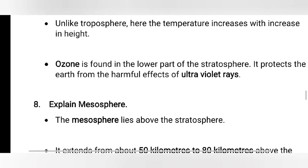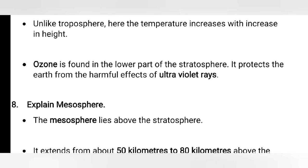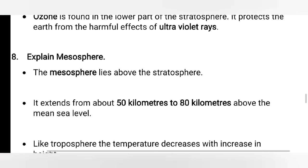Ozone is found in the lower part of the stratosphere. It protects the earth from the harmful effects of ultraviolet rays. Sunlight contains three types of rays: infrared rays, which are responsible for heating things; visible rays, which we can see; and ultraviolet rays, which are very harmful. Ozone protects the earth from the effects of these ultraviolet rays.